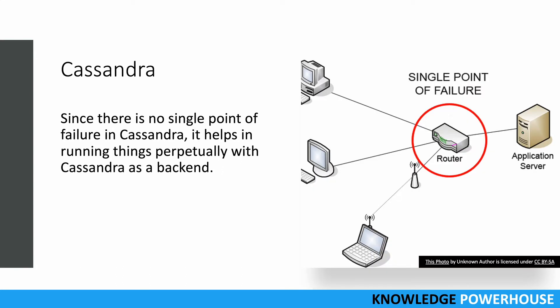Another reason Cassandra has grown popular is that since there is no single point of failure, processes in Cassandra can keep running perpetually — meaning without any downtime. Cassandra will be used as a backend to keep running processes continuously. Even if only one or two nodes are up, your system stays up. That way, you get very high throughput and TP99-level performance from Cassandra.